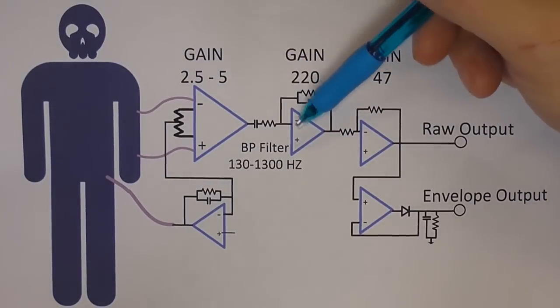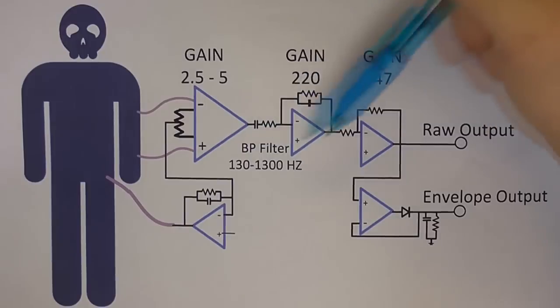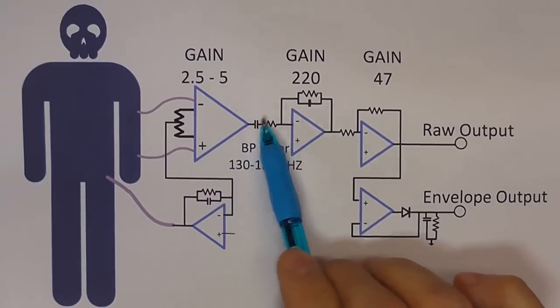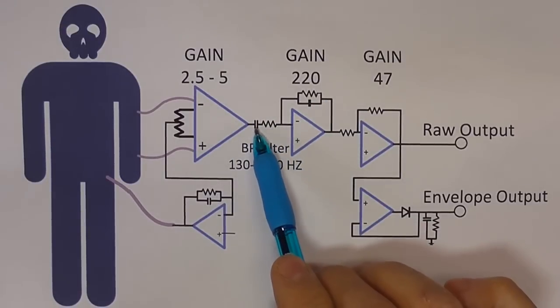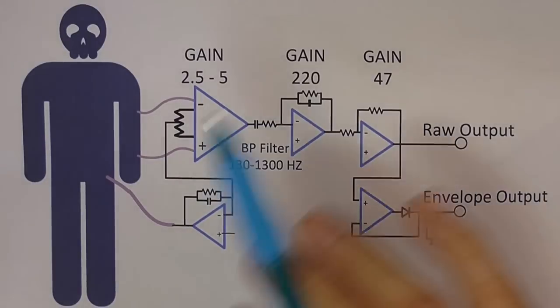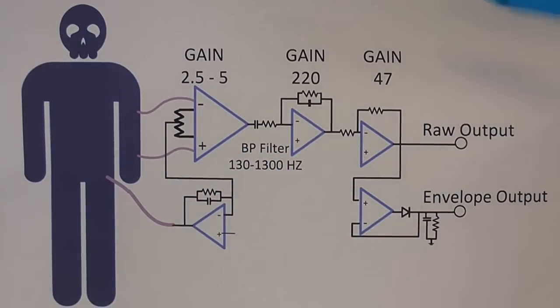Coming out of our instrumentation amp, somewhere between 2.5 and 5 gain, we go through a bandpass filter. Remember a capacitor. DC can't go through a capacitor. High frequencies scream through it, low frequencies can't even get through it. So therefore, it's a high pass, no low frequencies, no DC. So this decouples all this drifting also.